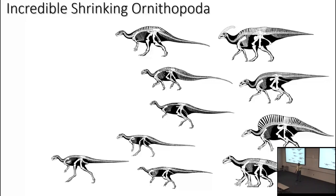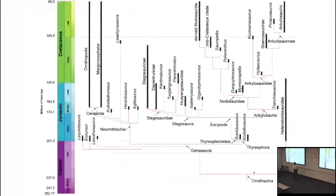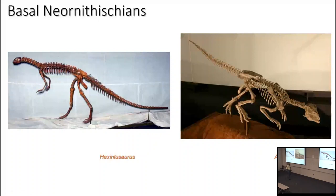Ornithopoda is basically the hadrosaurids and everything closer to them than to the horned dinosaurs. There's a clade called Neornithischia — you don't need to know its traits in detail — but it's the ornithopods, the marginocephalians, and everything closer to them than to thyreophorans. They represent the standard generic configuration: a bipedal ornithischian without armor, frills, or horns.